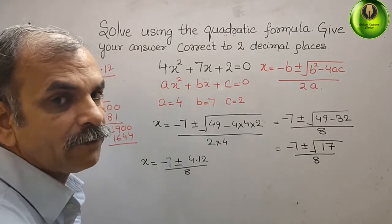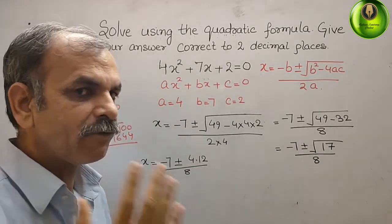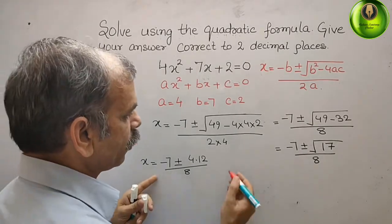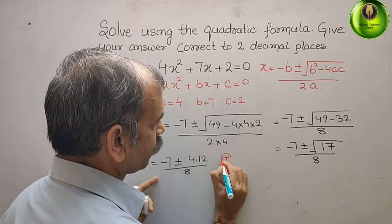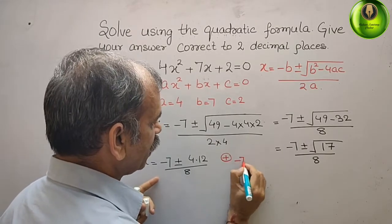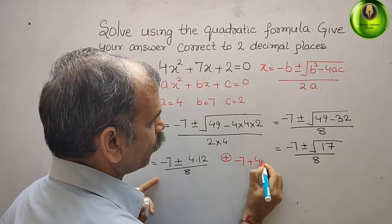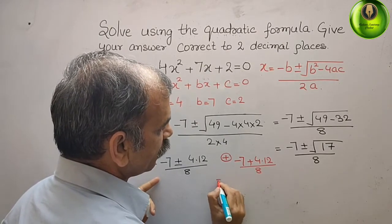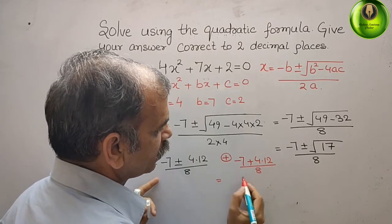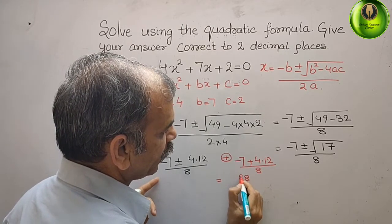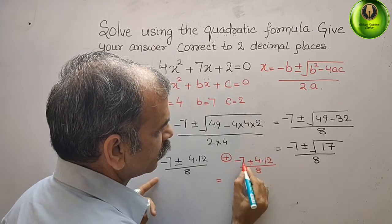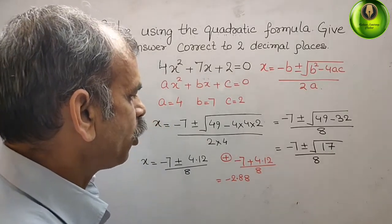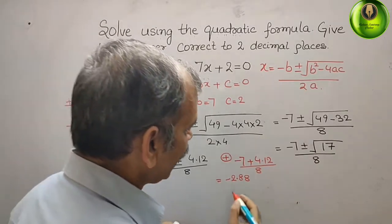Now first time we will take plus one, second time we will take minus one. What we will get? We get (-7 + 4.12) / 8, that is equal to how much? -2.88 / 8.